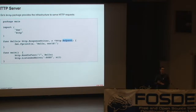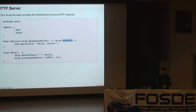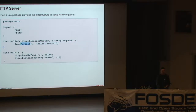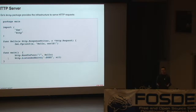The request contains the HTTP request data — query parameters, the path, the address of the person making the request, headers, etc. The response writer is a type that you can write to, which is what I'm doing with fprintf. All I want to do is write the string 'hello world' using fprint to w. Finally, I call listen and serve to set up my web server listening on port 8080, and this function blocks forever serving HTTP requests.